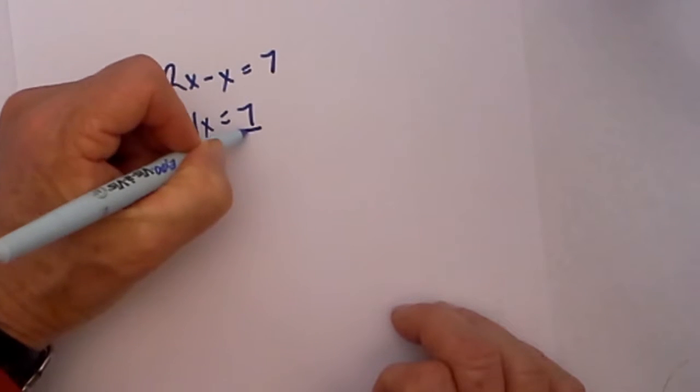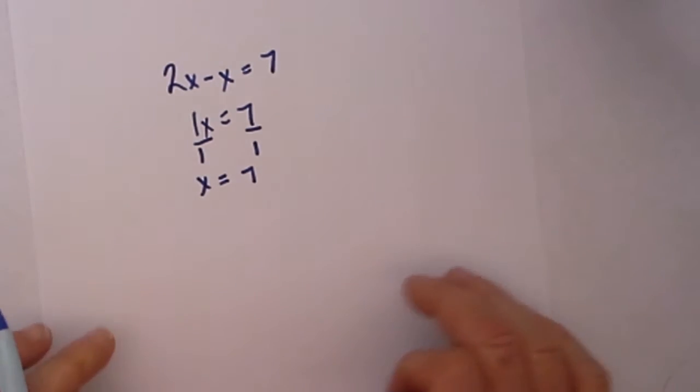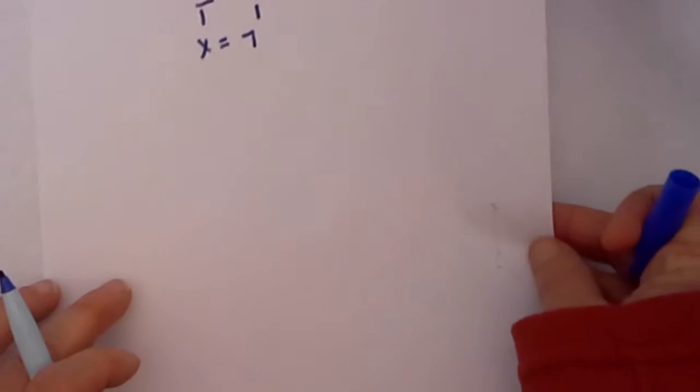Next we divide each side by 1, so x is equal to 7. Now another example that would be similar to that.